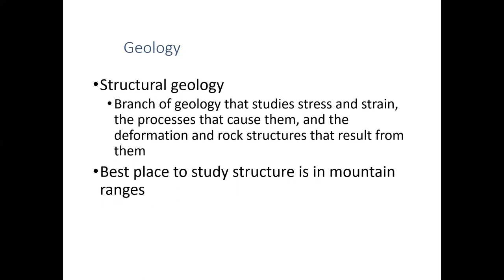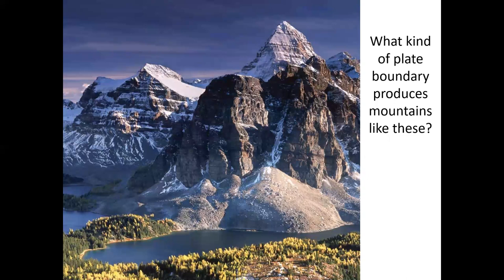Up here on the surface we're oblivious to what's going on underneath our feet, but a road cut lets us see the structure of the Earth and how it supports what we see at the surface. Looking at the forces at plate boundaries — what kind of plate boundary would produce high, rugged mountains like these? If you said a convergent plate boundary where two continental plates are colliding, you'd be correct.